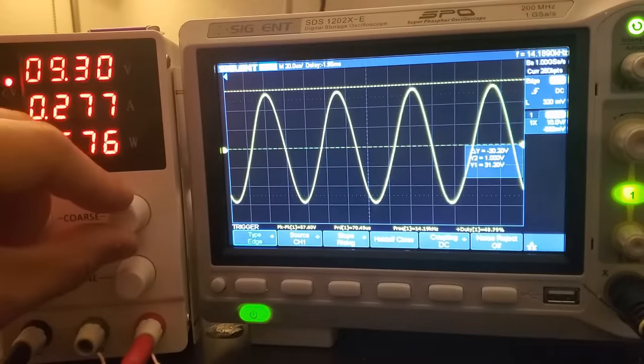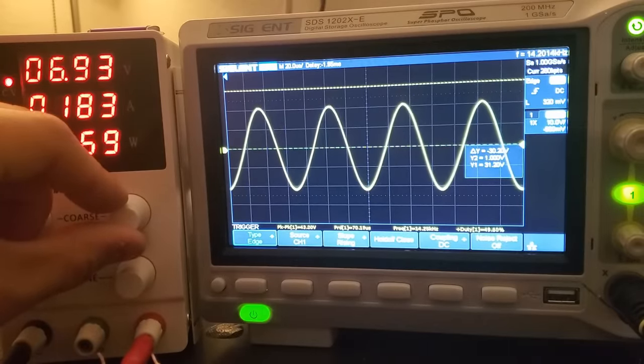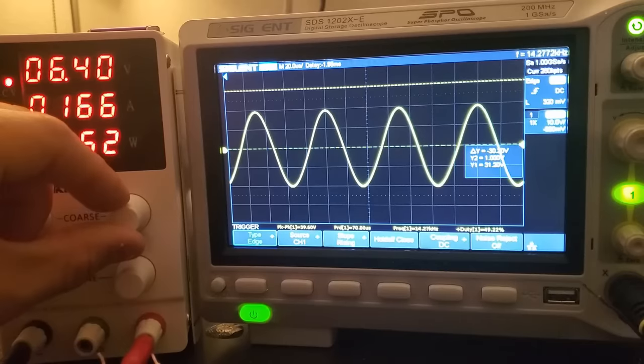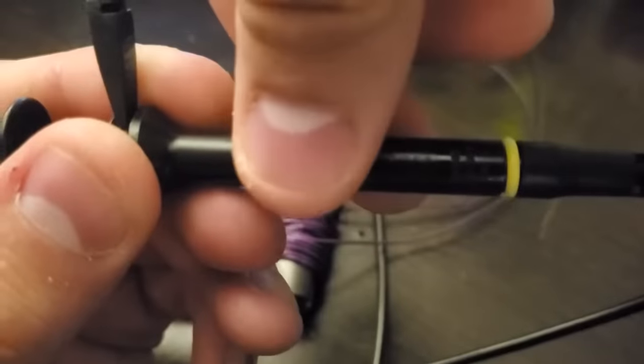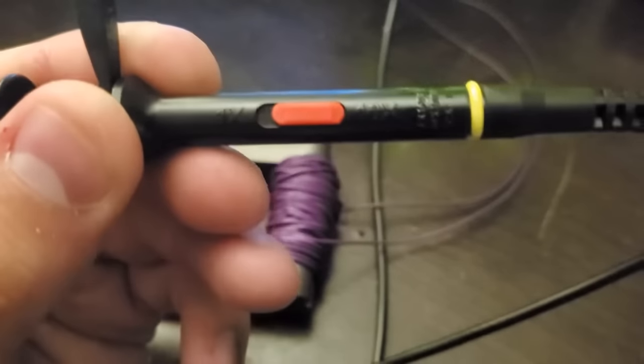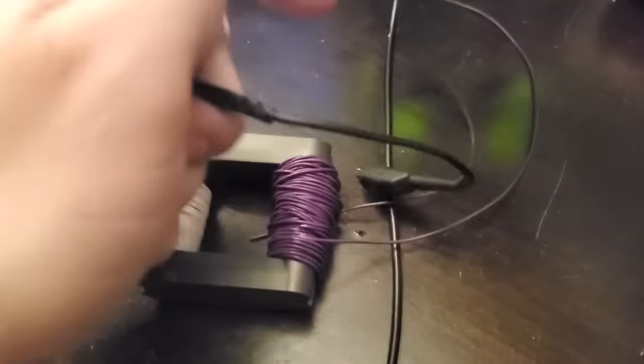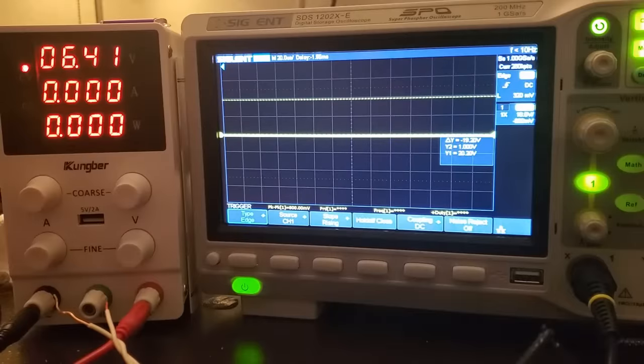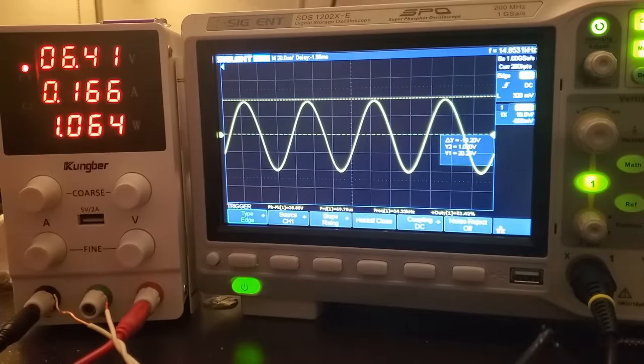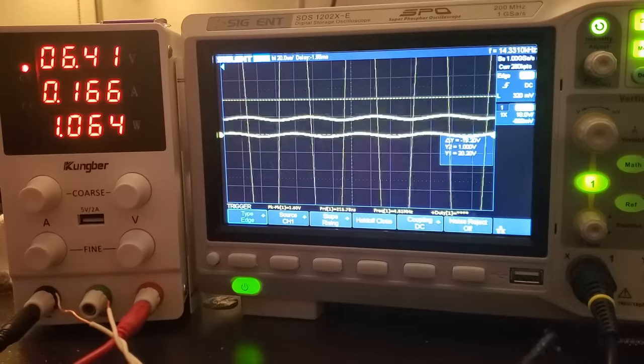Here I'm going to adjust my input voltage until my load voltage is about 20 volts. This happens at about 6.4 volts of input. Then I'm going to set my oscilloscope probe to 10x mode and attach it to the transformer output. This means that whatever the oscilloscope reads is actually 1 tenth of the real voltage. And I get exactly what I expected. The scope shows 20 volts, meaning the transformer is actually outputting 200 volts.